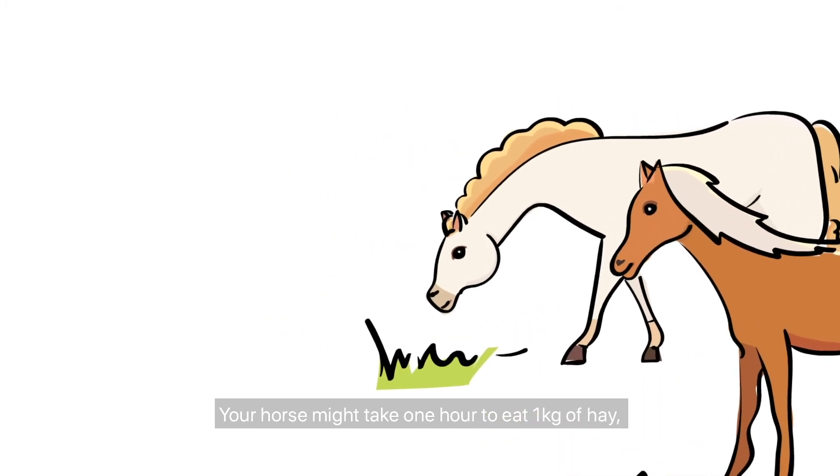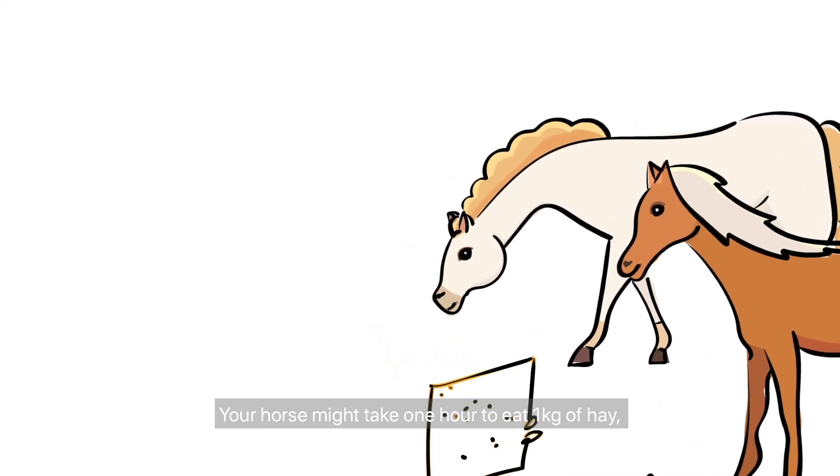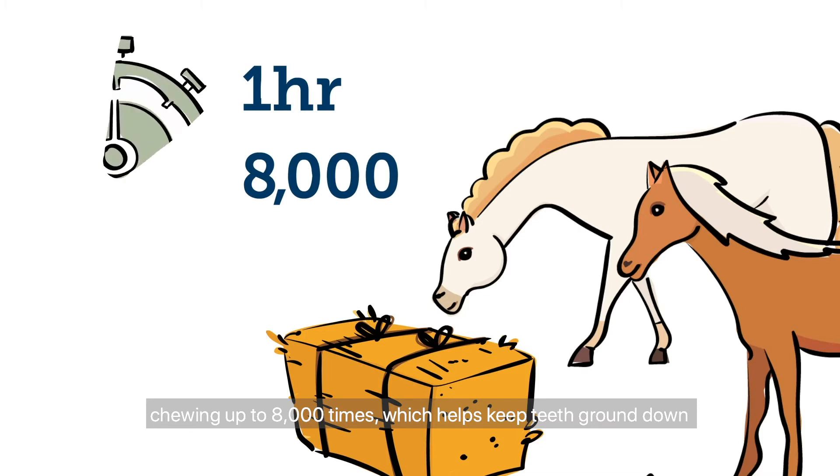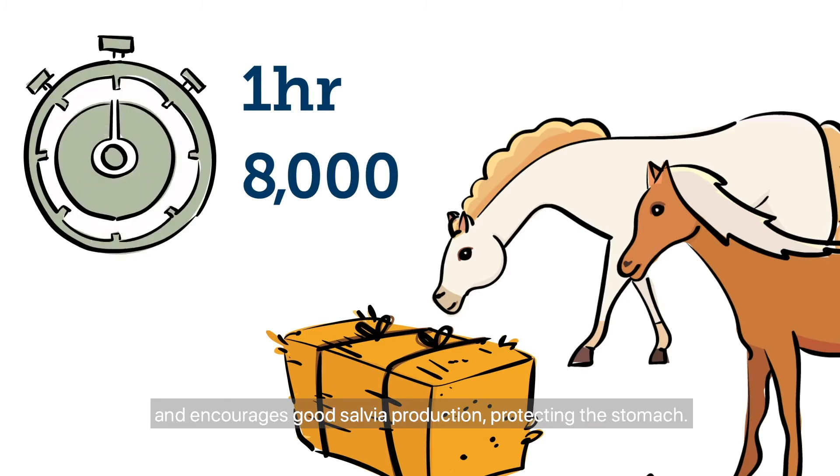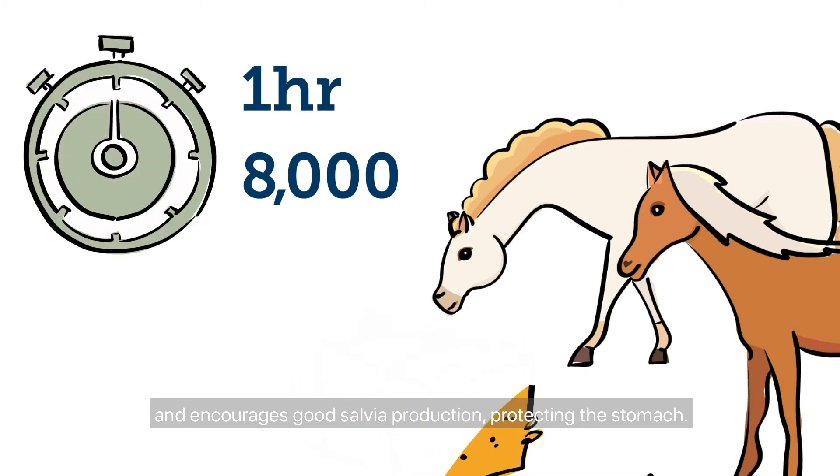Your horse might take one hour to eat one kilogram of hay, chewing up to 8,000 times, which helps keep teeth ground down and encourages good saliva production, protecting the stomach.